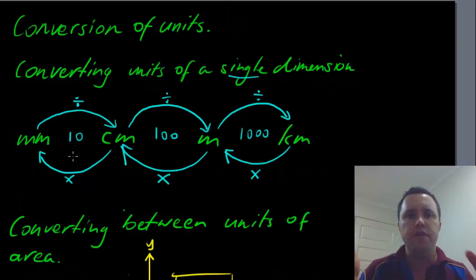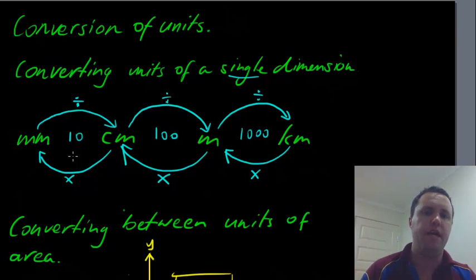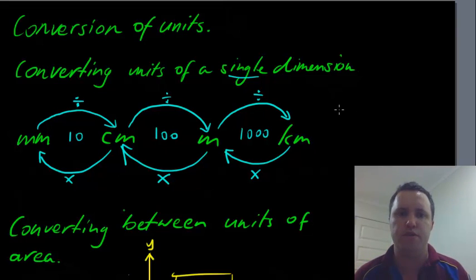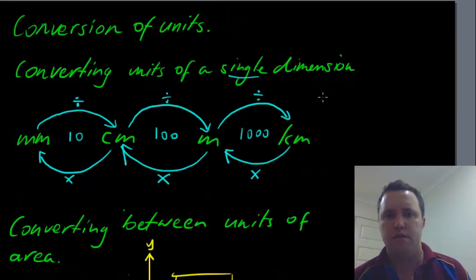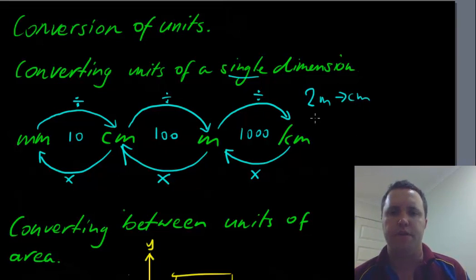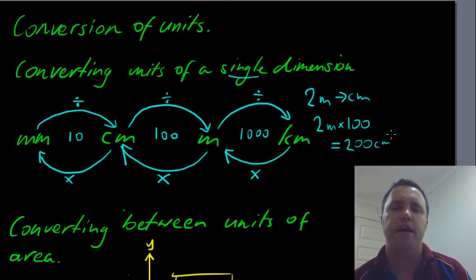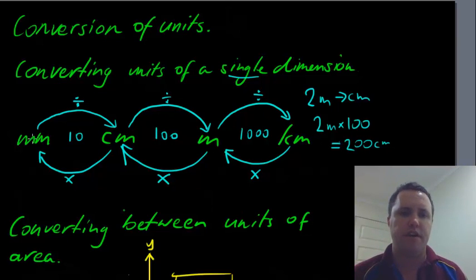So think about it this way: if your unit is getting bigger, you will divide. But if your unit is getting smaller, you multiply. For example, to convert 2 metres to centimetres, that would be 2 metres times 100, which equals 200 centimetres. You might do that off the top of your head — I just wanted you to see this pattern. If you're jumping from millimetres all the way up to metres, you divide by 10, then divide by 100 — you do all these steps in a row.